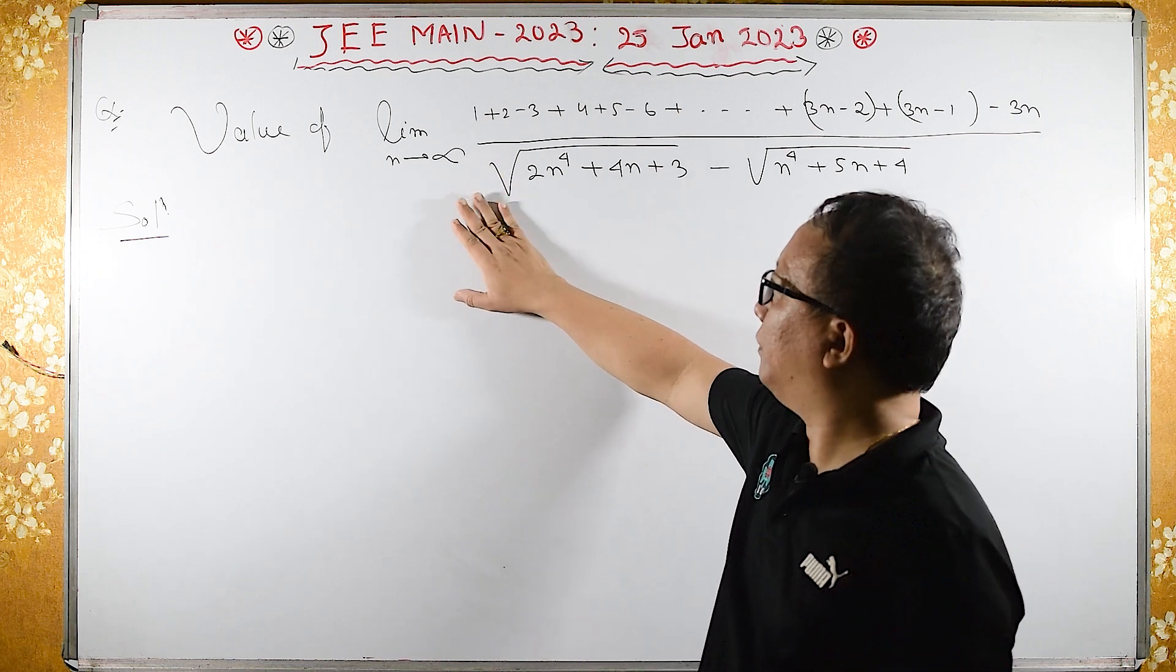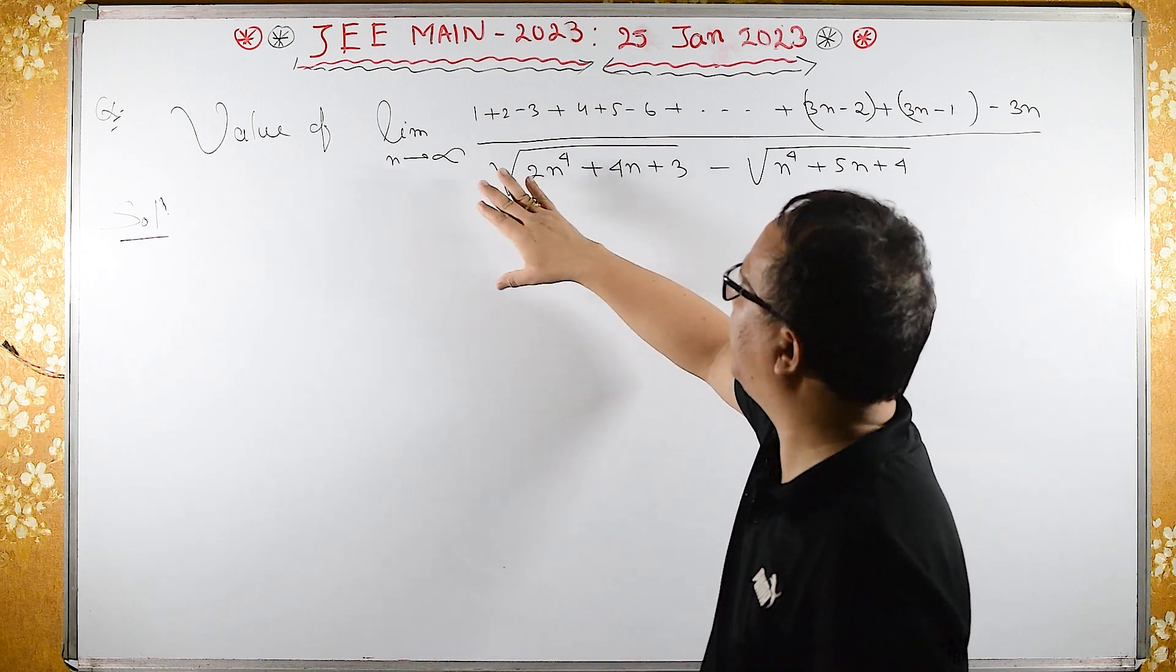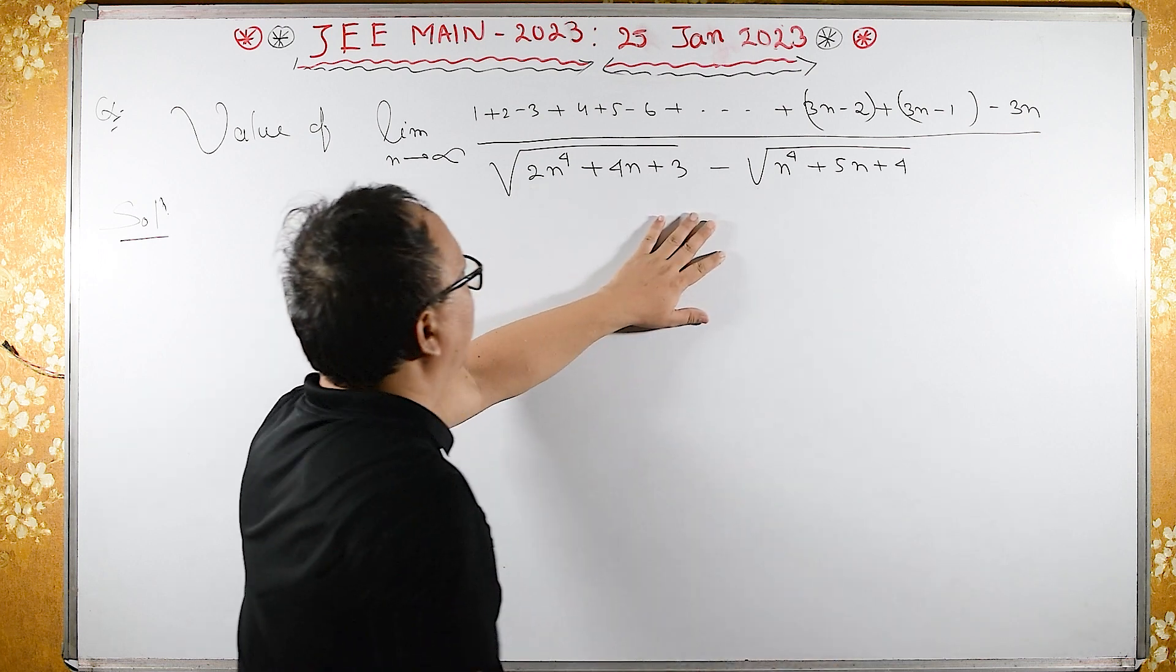Now, we need to find limit of this value, here n tends to infinity, this we have.